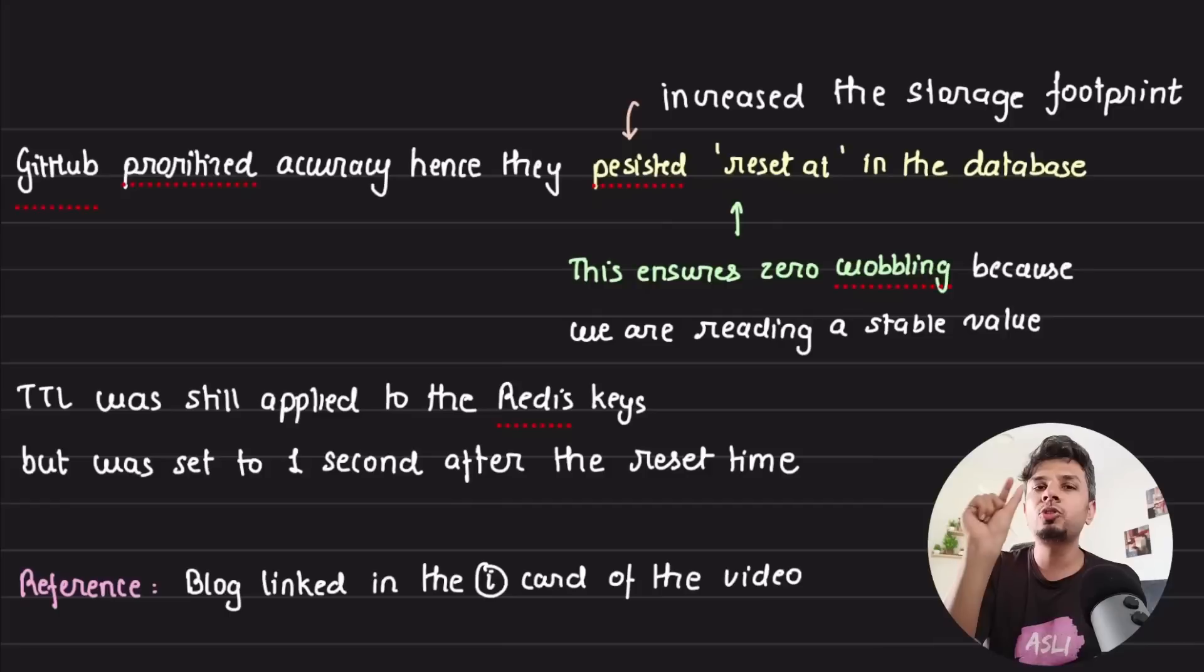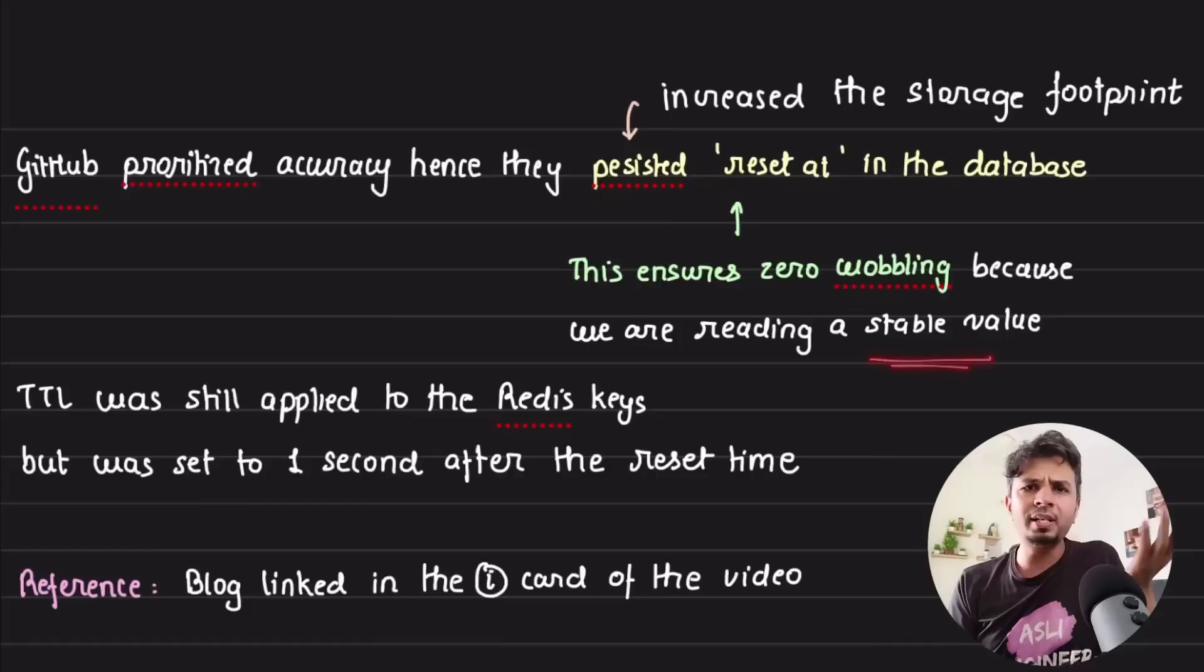They started setting another key where they held reset-at, which is the absolute time at which it is supposed to reset. Now what happens is now they are returning these two things from the Lua script. Now this way, what happens is because this value is stable, nobody's changing it, you are not at runtime computing the reset-at. It is persisted in the database. You get that value and immediately send it, so wobbling is gone.